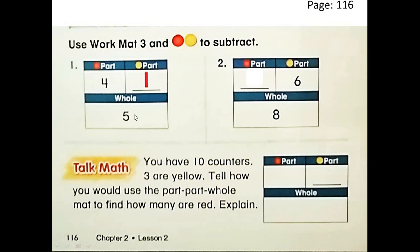Excellent, grade 1! So 4 plus 1 equals 5 — that's right. Let's check again: 4 plus 1 equals 5. Let's see the next exercise. Here we have 8 as a whole. In the first part we have 6 yellow counters. How many red counters should you have in the second part? 8 in all, 6 for yellow — did you say 2, grade 1? You are totally right! It's 2. Let's check again: 2 plus 6 equals 8 in all.